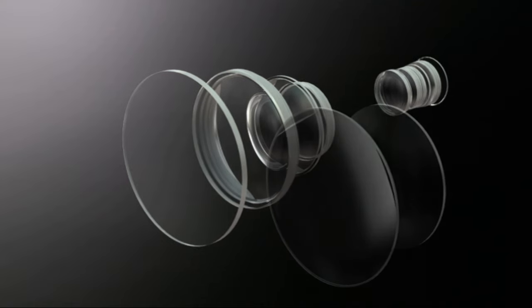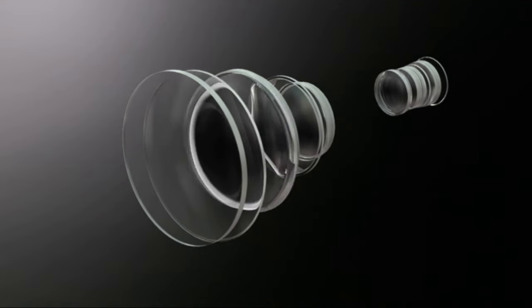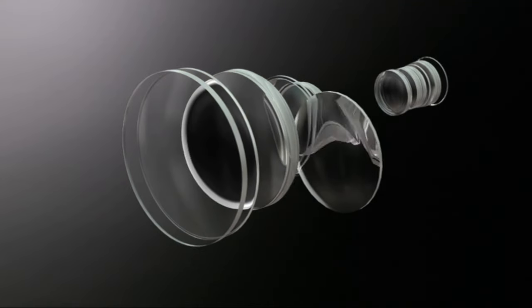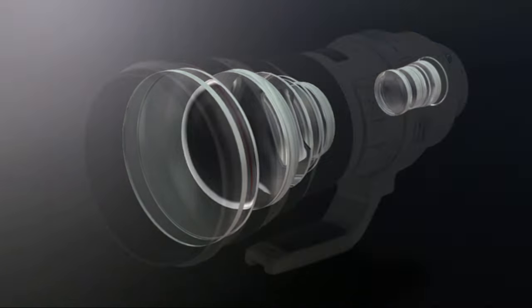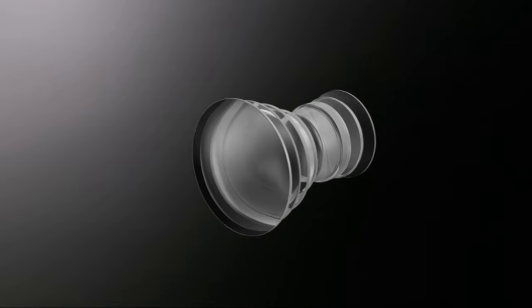Lenses for single lens reflex cameras are made up of a large number of lenses. Each lens is responsible for such roles as adjusting colors, distortion, and focus, as well as changing the focal distance.